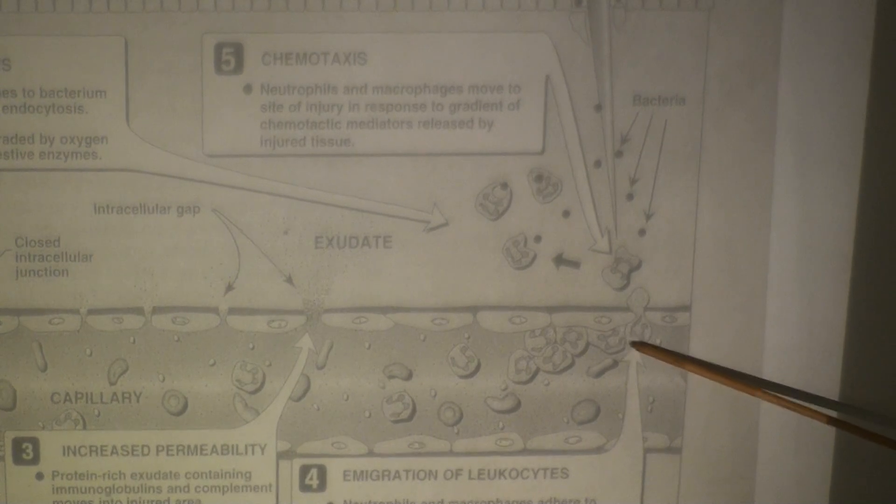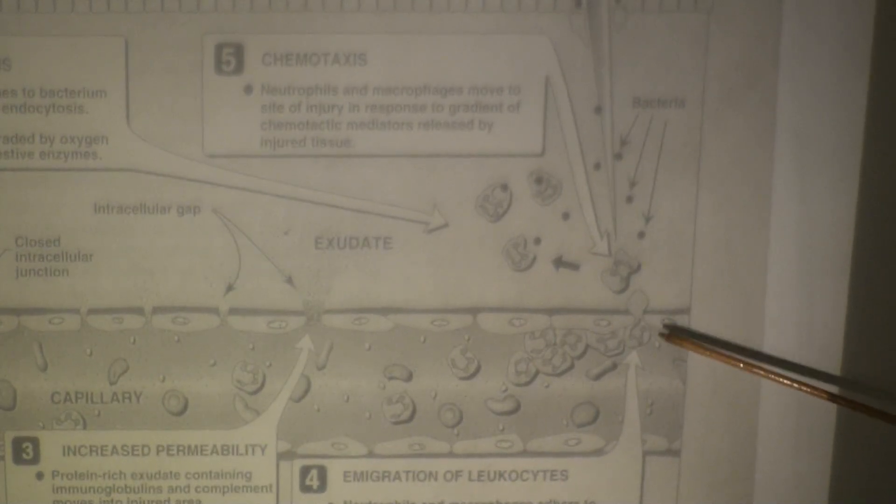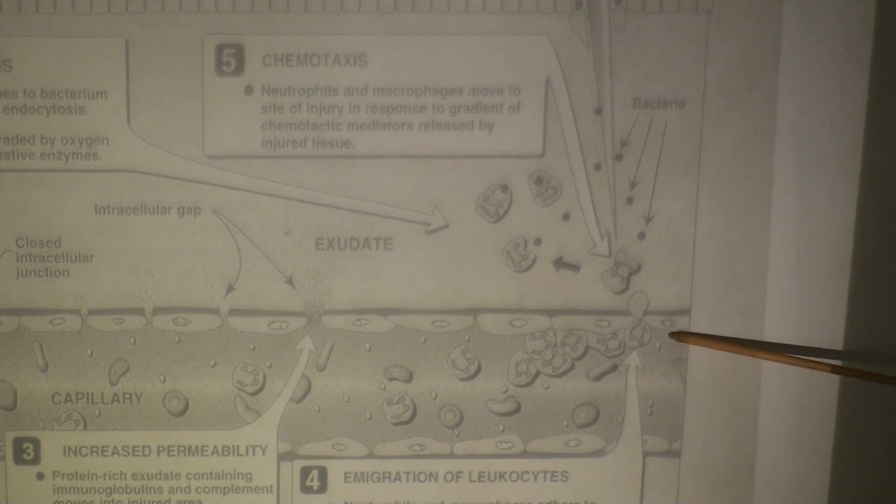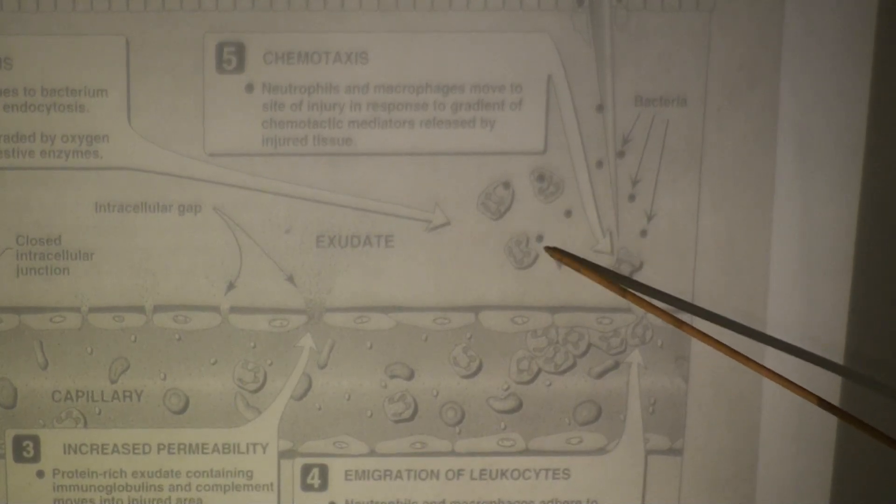And then what we notice is the neutrophils are squeezing between those gaps. And that process is called diapedesis, where they're actually moving from the lumen of the blood vessel into the extravascular tissues.